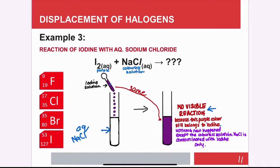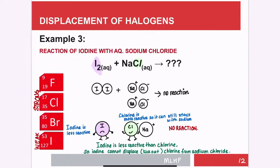There is no reaction because the NaCl is only contaminated with iodine — nothing new happens. In the atomic and cartoon diagrams, iodine is less reactive and is unable to displace chlorine out of sodium chloride. Chlorine is stronger and stays with sodium, so therefore there is no reaction.